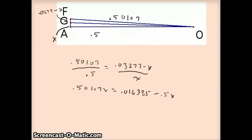So, I've enlarged this picture here. AF was calculated to be 0.03277 from before. Using the Pythagorean theorem, you can work out FO to be 0.50107. Now, finally, we're going to calculate out AG, which we're going to call X. That makes FG 0.03277 minus X.